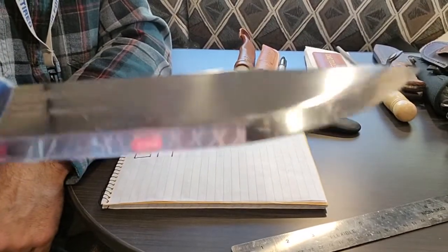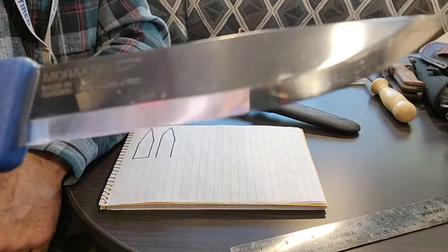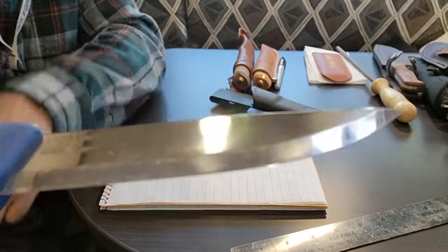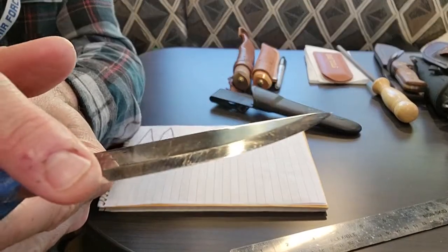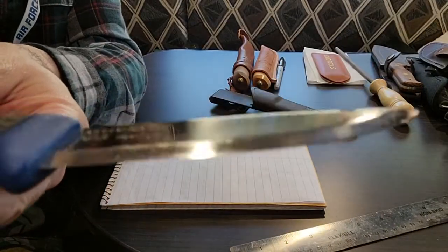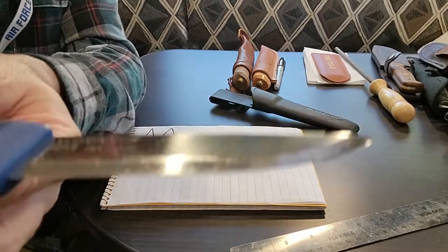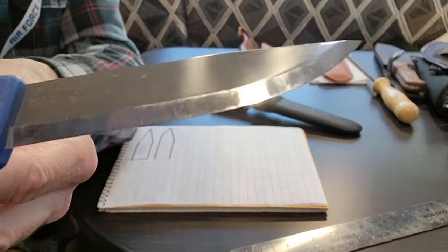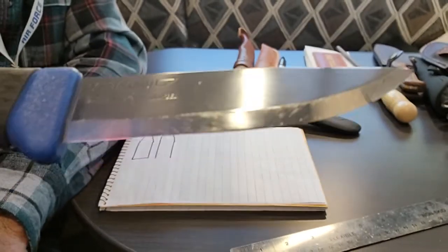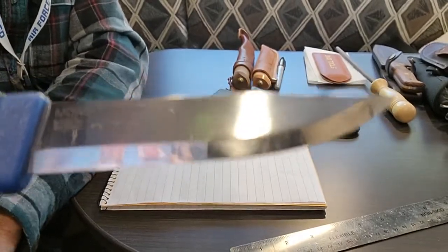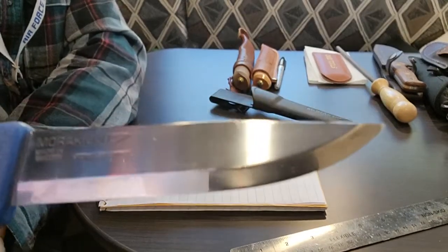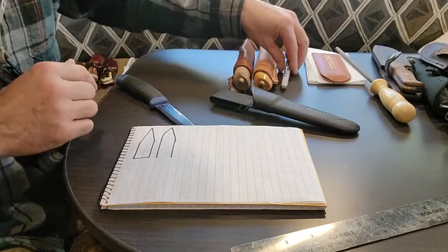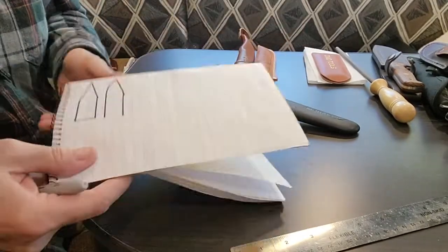Some of the Scandi grinds they call zero Scandis. In other words, the apex, the tip of that edge, comes to a complete apex, a sharp point. The Moras put a little secondary minute secondary bevel on that edge, and I kind of like that. It gives it some strength and it still works well just like a Scandi.